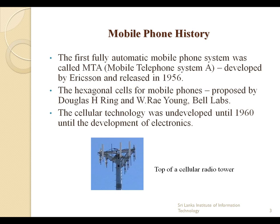Then hexagonal cells were used. The picture shows a cell tower they used, which was able to transmit or receive in three directions. Mobile technology remained undeveloped until electronics were developed in 1960.